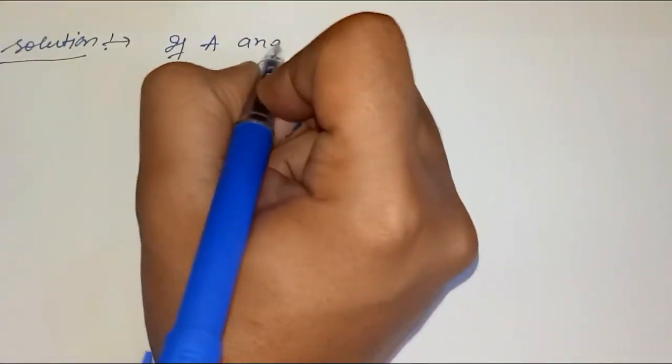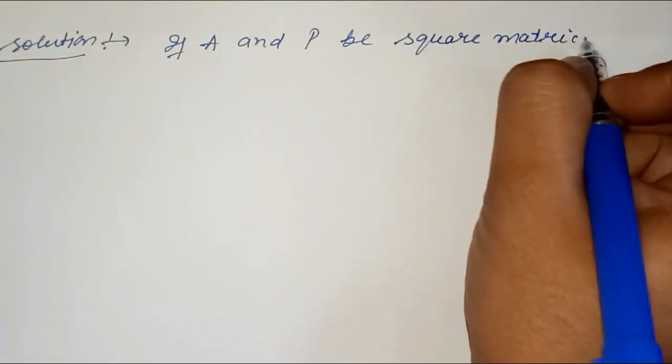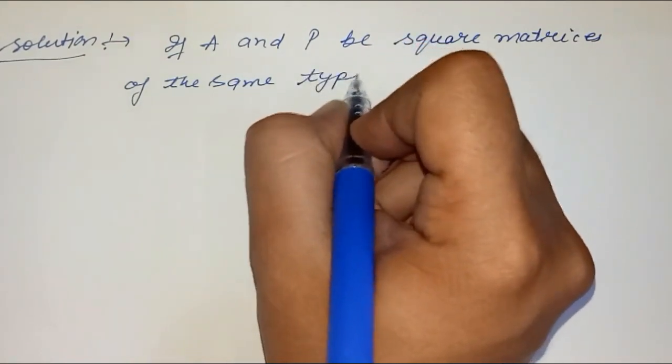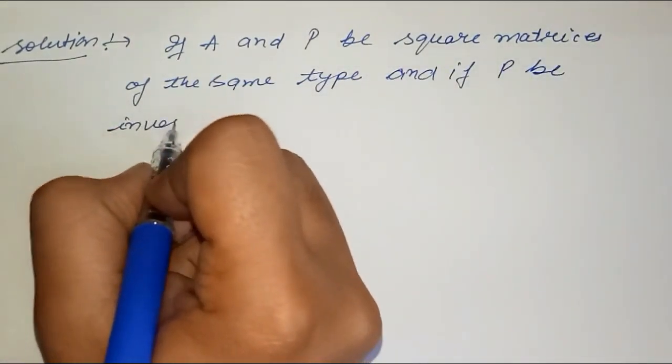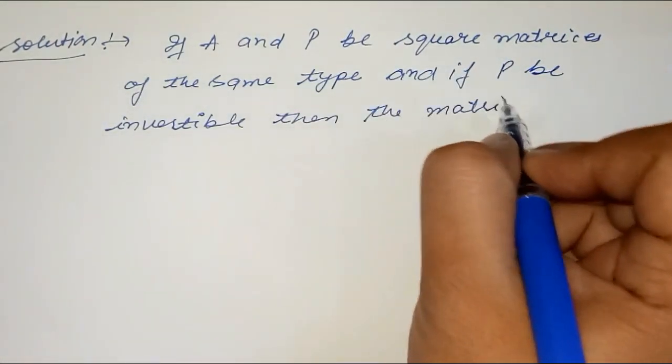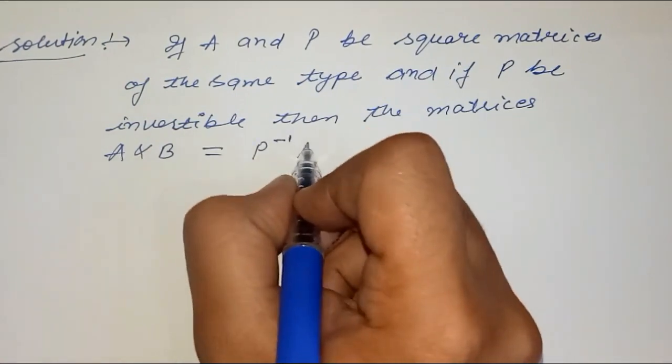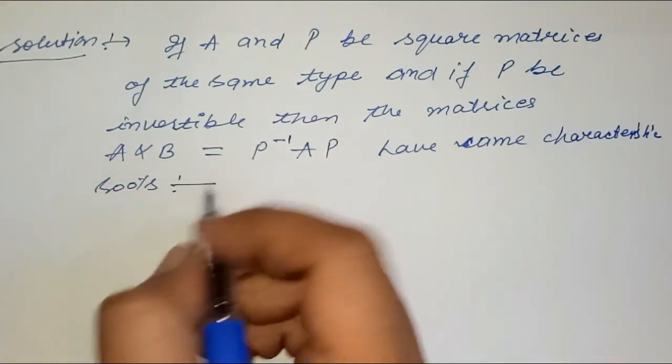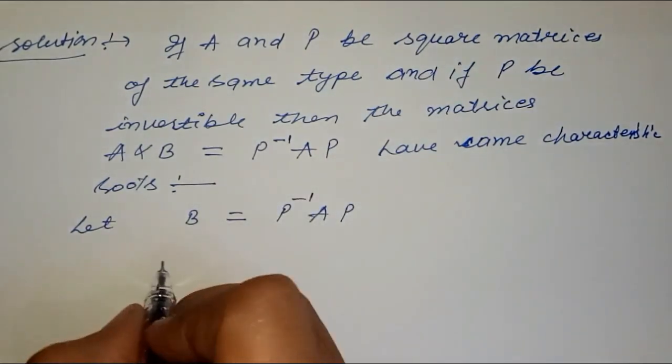If A and P are square matrices of the same type, and if P is invertible, then the matrices A and B equals P inverse AP have the same trace. Let B equal P inverse AP.